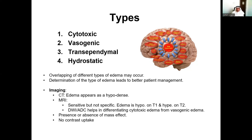Edema in general on imaging appears as low attenuation or hypodense on CT, with low signal intensity on T1 and high signal intensity on T2. It may or may not show restricted diffusion. Diffusion-weighted images and ADC maps help differentiate the two main types: cytotoxic edema, which is high signal on DWI with low signal on ADC, and vasogenic edema, which appears hyperintense on both DWI and ADC maps.